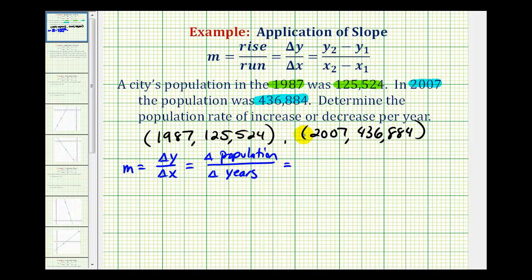So if we call these the ones and these the twos, this will be x sub one, y sub one, x sub two, y sub two.